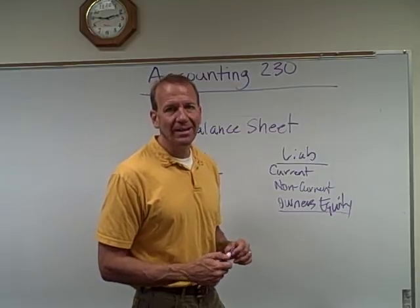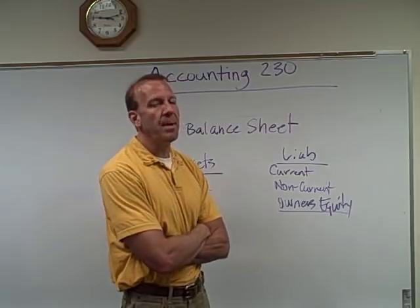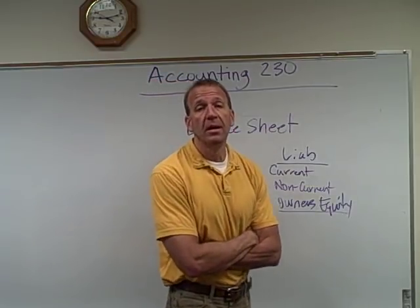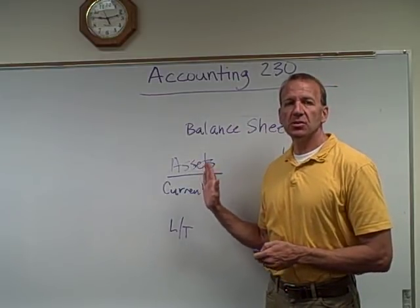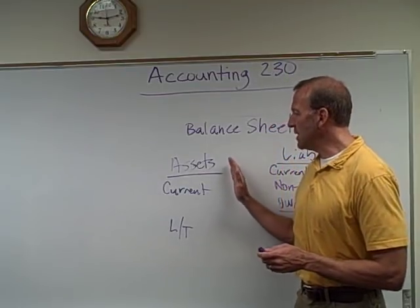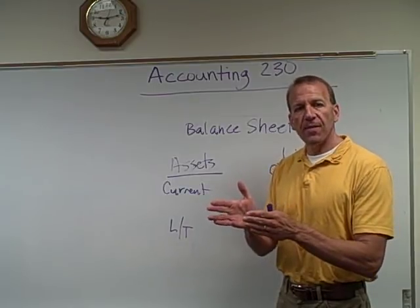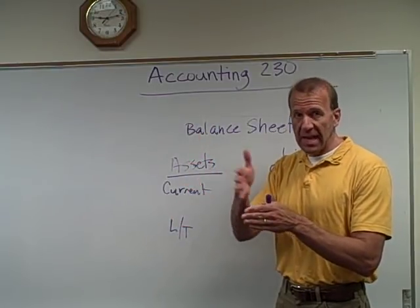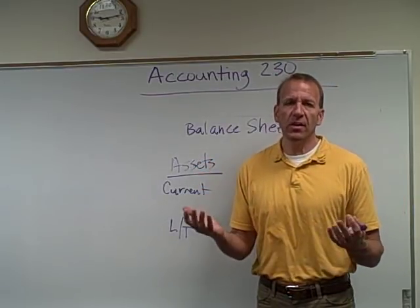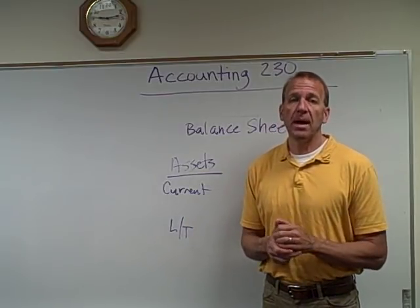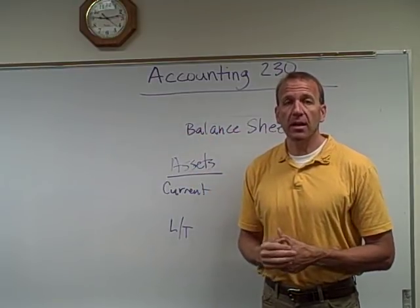Owner's equity does not have a current and non-current component. And lastly, comparative financial statements — the chapter goes over comparative balance sheets. That means it's going to show at least two or more years of activities. If they show two years, that's called comparative because you can compare them between the years. Some businesses even put in three or more years, and that's not unusual.